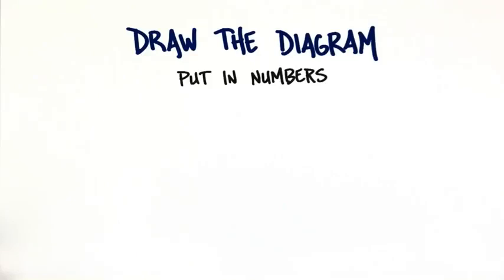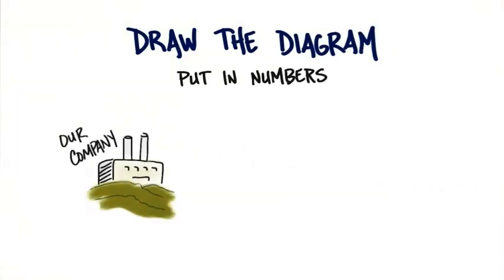So in summary, in the revenue model for this class, the best thing that you could do is start drawing the diagram. What I want you to do is draw the diagram of both your revenue streams and your pricing, and I want you to actually put numbers in them. So let's assume this is your company over here.